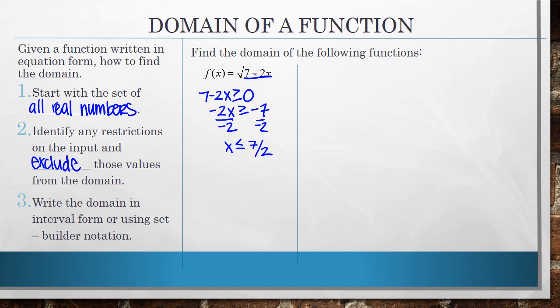7 minus 2 times 0 is 7. And the square root of 7 is a valid answer. It's the square root of 7. So when I write this, I can write it in interval or set builder notation.